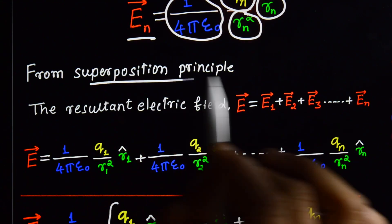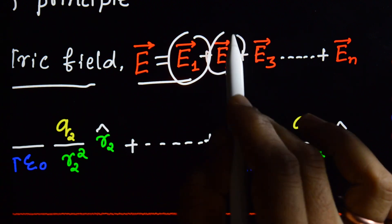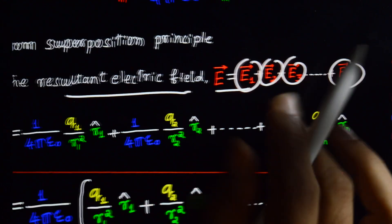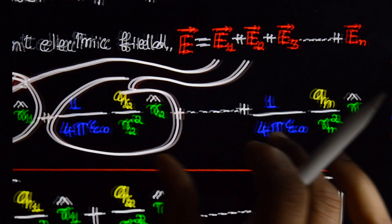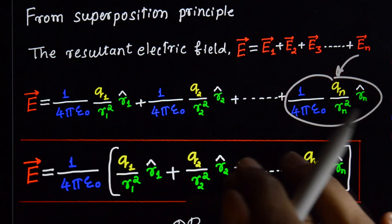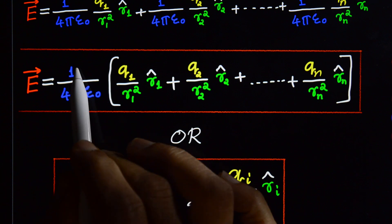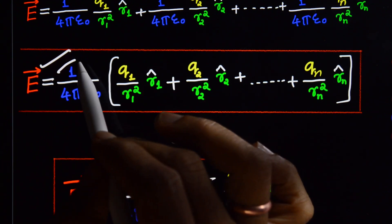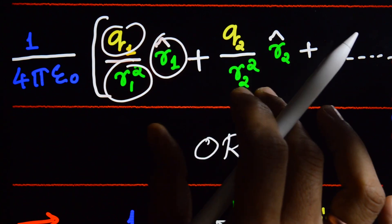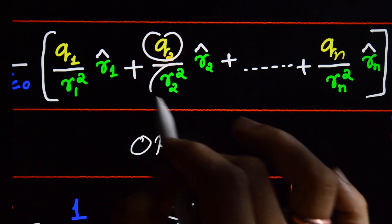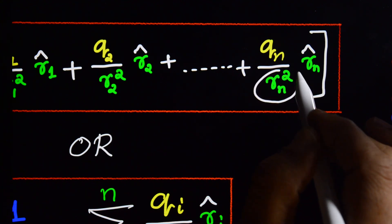From the superposition principle, the resultant electric field at point P is the vector sum E = E1 + E2 + E3 + ... + En. Substituting the individual values and taking (1/4πε₀) as a common factor outside, the electric field at point P due to the system of charges is: E = (1/4πε₀) [q1/r1² · r̂1 + q2/r2² · r̂2 + ... + qn/rn² · r̂n].